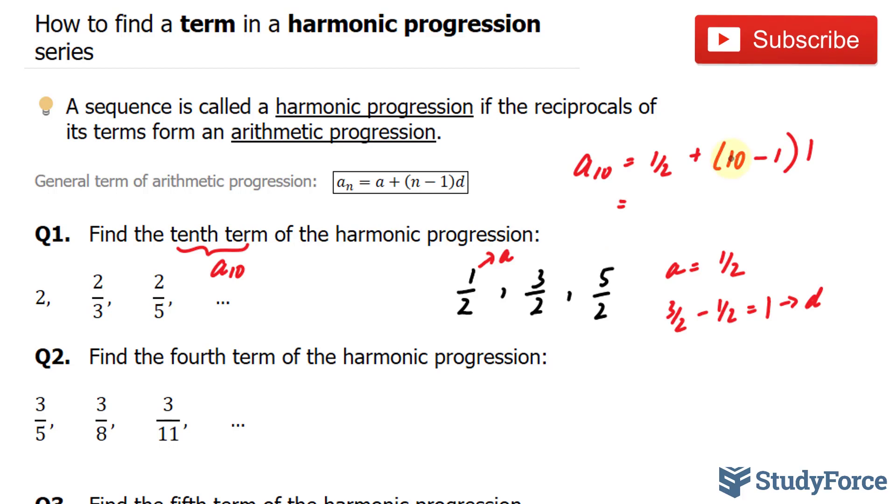This is an easy calculation. 10 minus 1 is 9, times 1 is still 9. 9 plus half is 9.5, or 19 over 2. 19 over 2 is equivalent to 9.5.